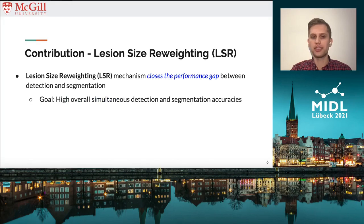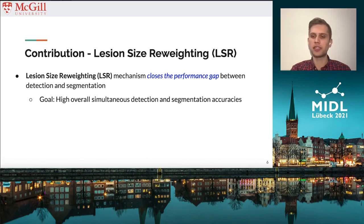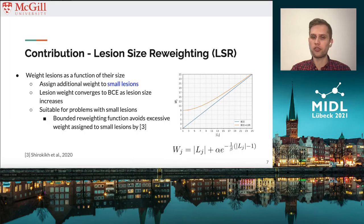Our contribution is lesion size re-weighing, which allows us to close the performance gap that exists between the operating point corresponding to optimal voxel-level segmentation performance and the operating point corresponding to optimal lesion-level detection performance. Our goal is to simultaneously achieve optimal detection and segmentation performance at a single operating point. We can do this by weighing lesions as a function of their size, assigning additional weight to small lesions relative to binary cross-entropy.